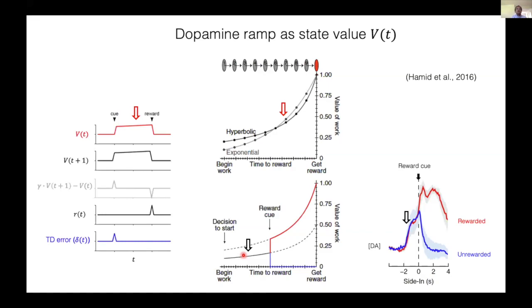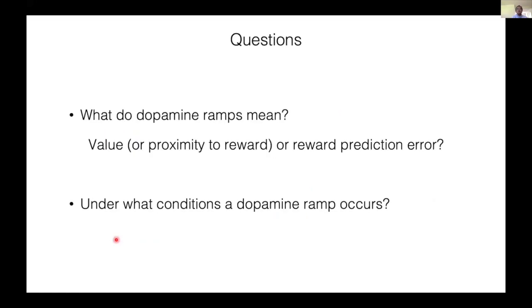To put this into context, the value function here corresponds to this part of the previous example. Therefore, their proposal meant that dopamine neurons signal values in some cases and TD error in others. So in this study we wanted to address the following questions: What do dopamine ramps mean after all? Is it value or reward prediction errors? And under what conditions do dopamine ramps occur?